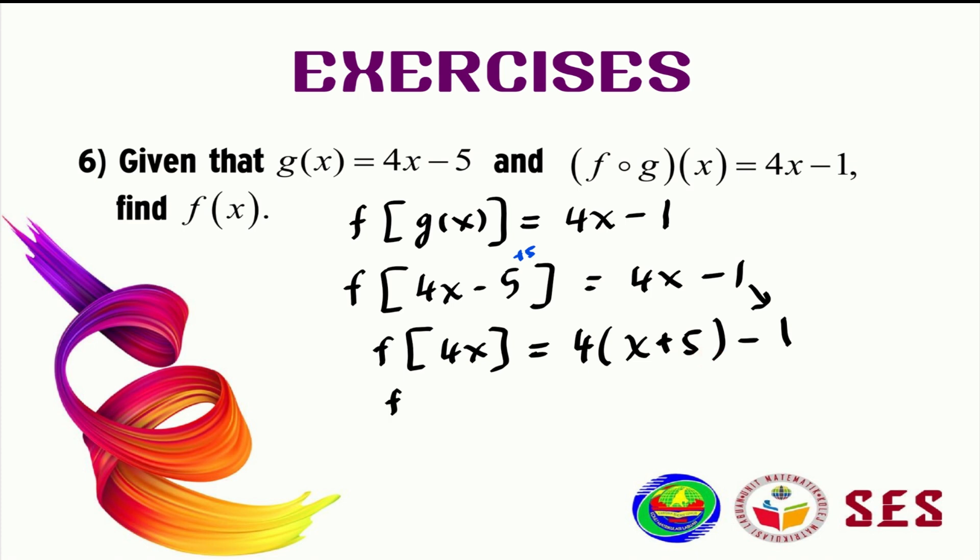So it will be f(x). We've got the f(x) already. So 4 times x plus 5 divided by 4 minus the constant 1. Simplifying the right side, 4 and 4 can be cancelled out, so it will be x plus 5 minus 1, which in the end gives us f(x) equals x plus 4.